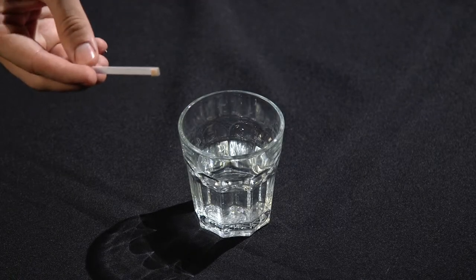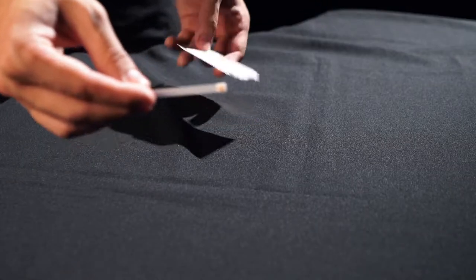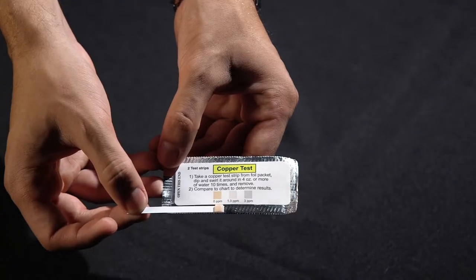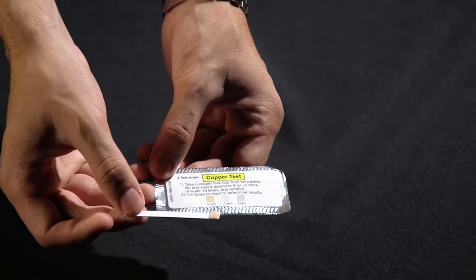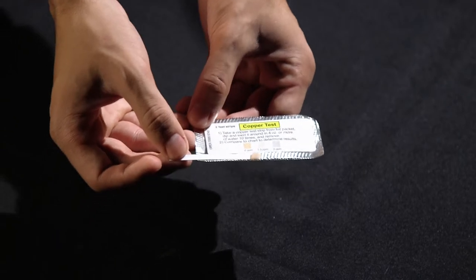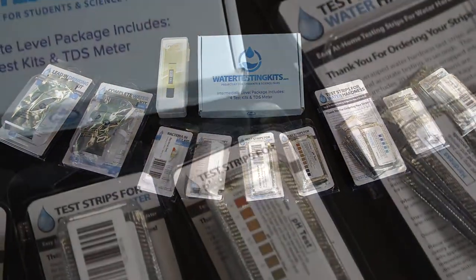Grab your test color chart and compare your test strip by holding it next to each section of the colored chart. That's it! Easy! Now you know your copper levels.